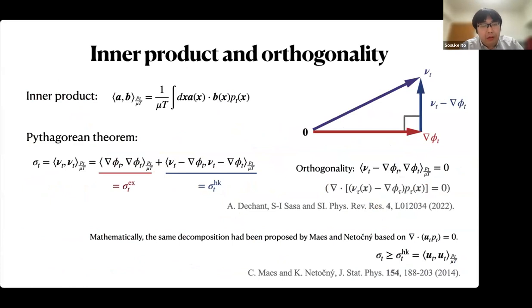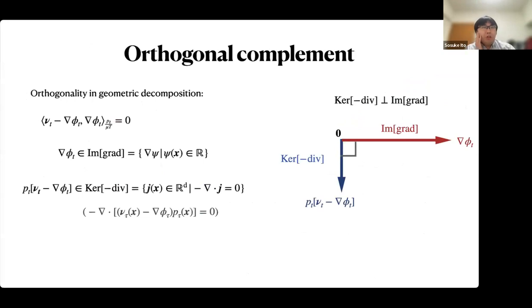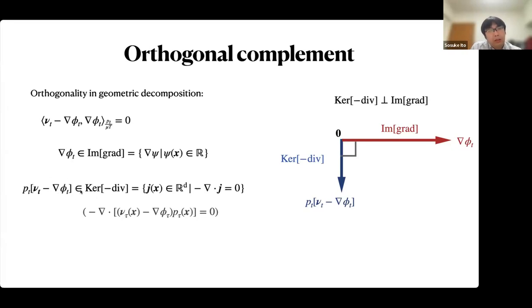This decomposition is strongly related to geometry. If we introduce an inner product, then this decomposition is a kind of the Pythagorean theorem for a right triangle, and the equation holds because of orthogonality. Mathematically, the same decomposition has been proposed by Maas and Netočný. This orthogonality originates from the orthogonality of two spaces: the kernel of the minus divergence and the image of the gradient. This quantity is in the image of the gradient, and this quantity is in the kernel of the minus divergence.